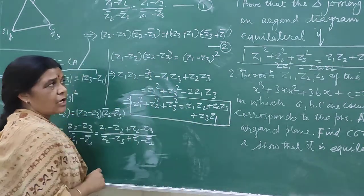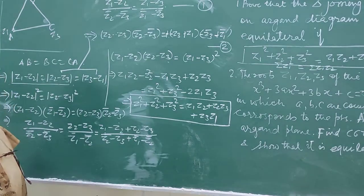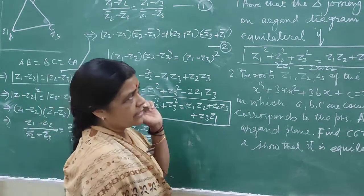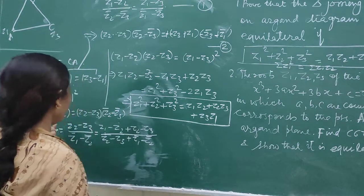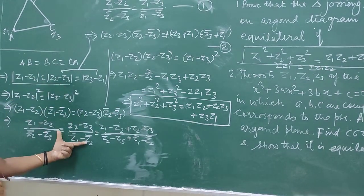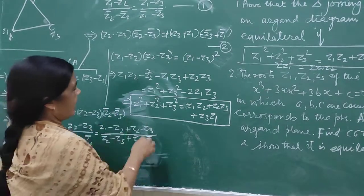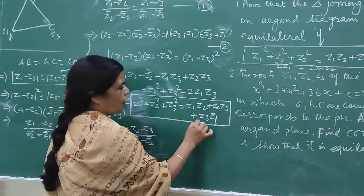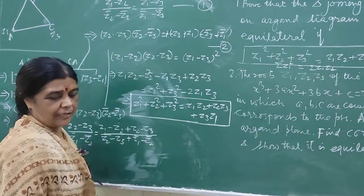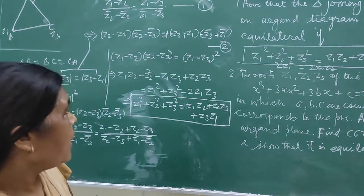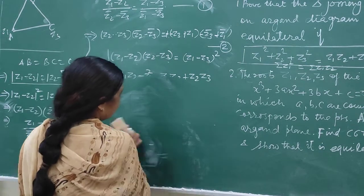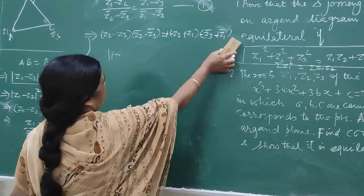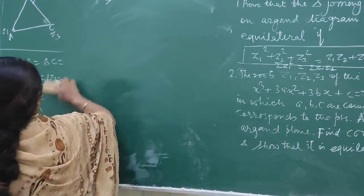We have derived this condition in symmetric form for the triangle with vertices Z1, Z2, Z3 to be equilateral. We simplified it in this particular way to get the condition in symmetric form. We will use this in the next problem.